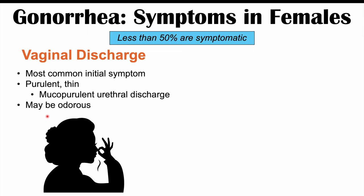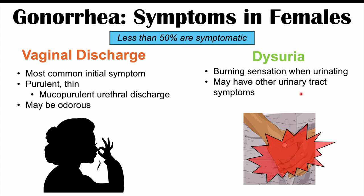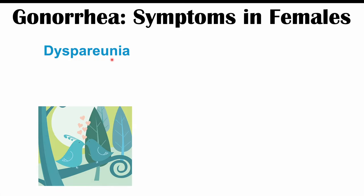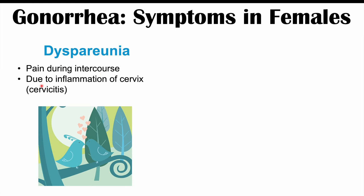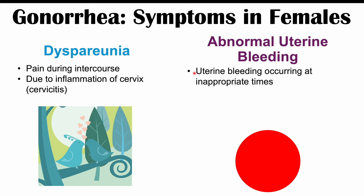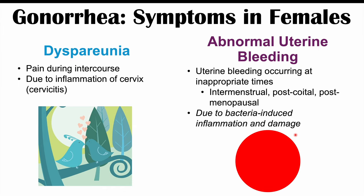Female patients may also experience dyspareunia — pain during intercourse — due to cervical inflammation. Abnormal uterine bleeding is another symptom, occurring at inappropriate times: intermenstrual bleeding between periods, post-coital bleeding after sexual intercourse, or post-menopausal bleeding. This is often due to bacteria-induced inflammation and damage to the cervix and surrounding structures.